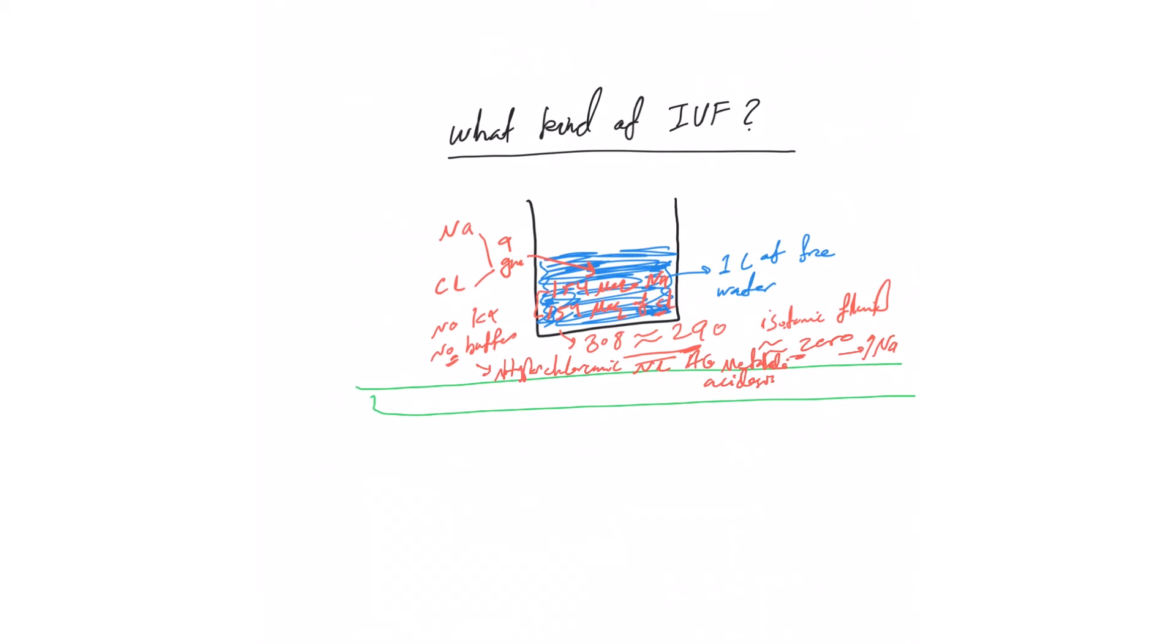Usually this happens with larger volume of saline given or if the saline is given for longer period of time. You will see the chloride going up and the bicarb going down. Alright, so that's normal saline.